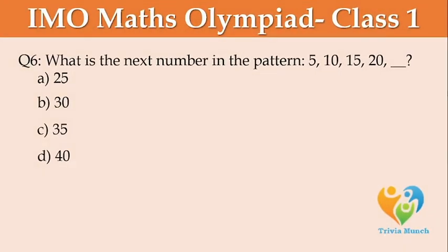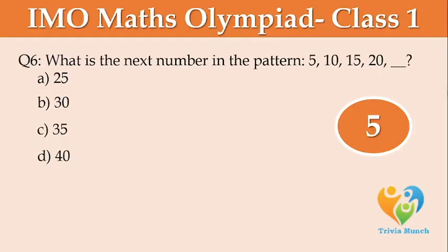What is the next number in the pattern? 5, 10, 15, 20, __ . Option A: 25, Option B: 30, Option C: 35, Option D: 40.